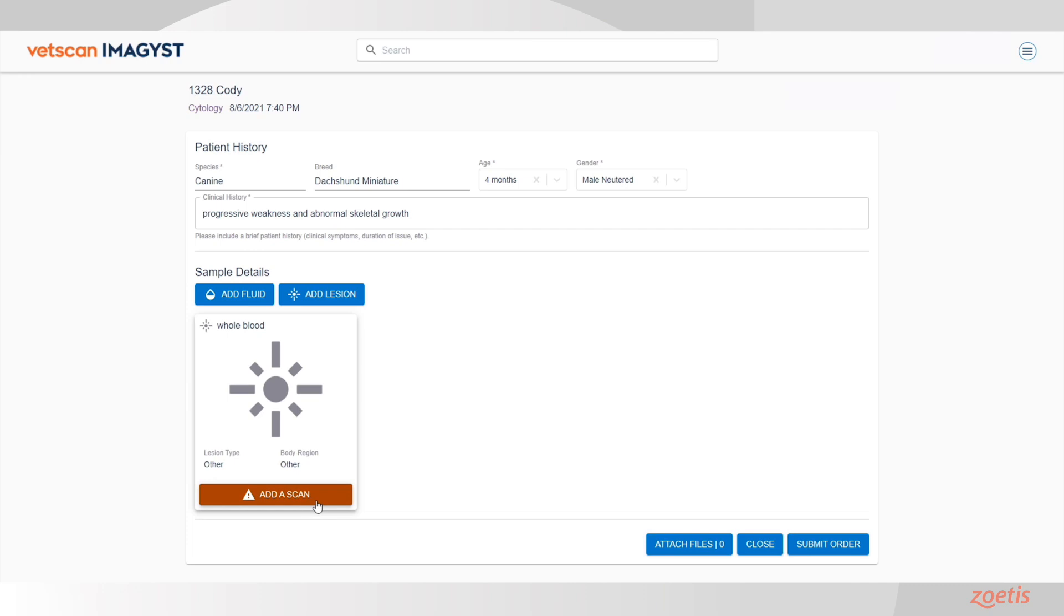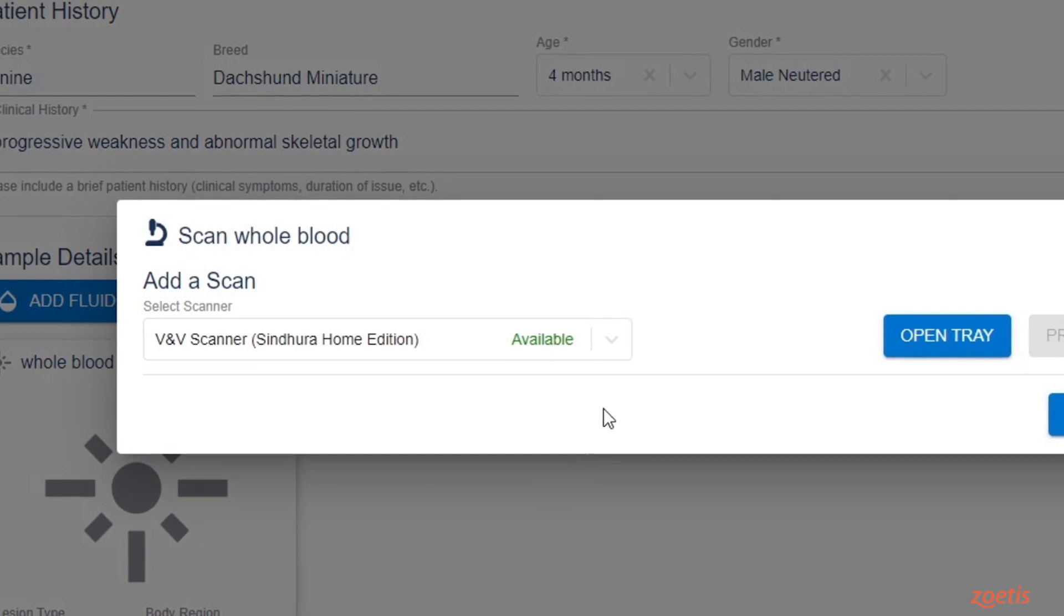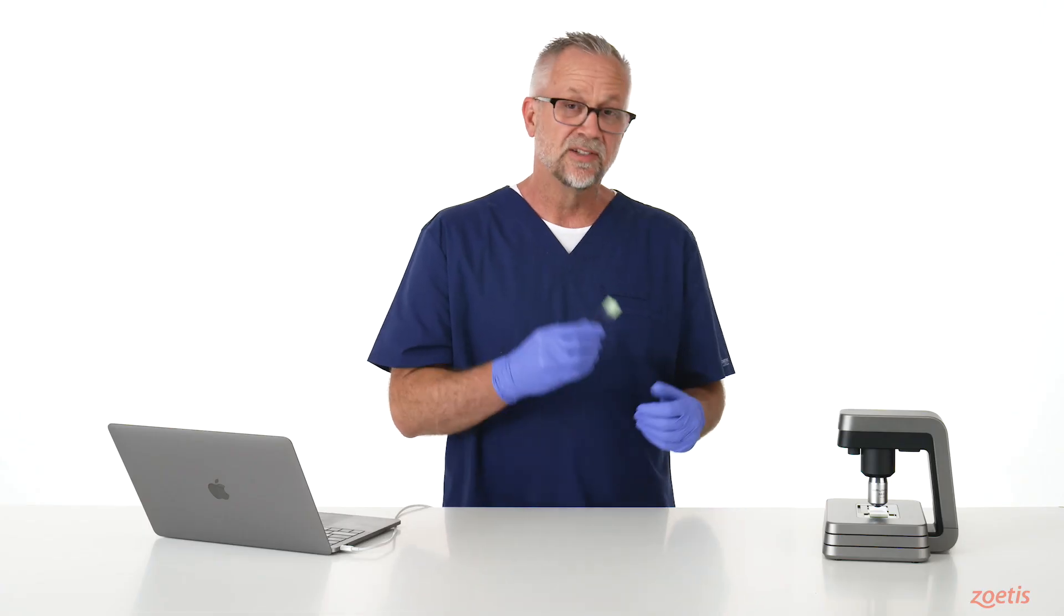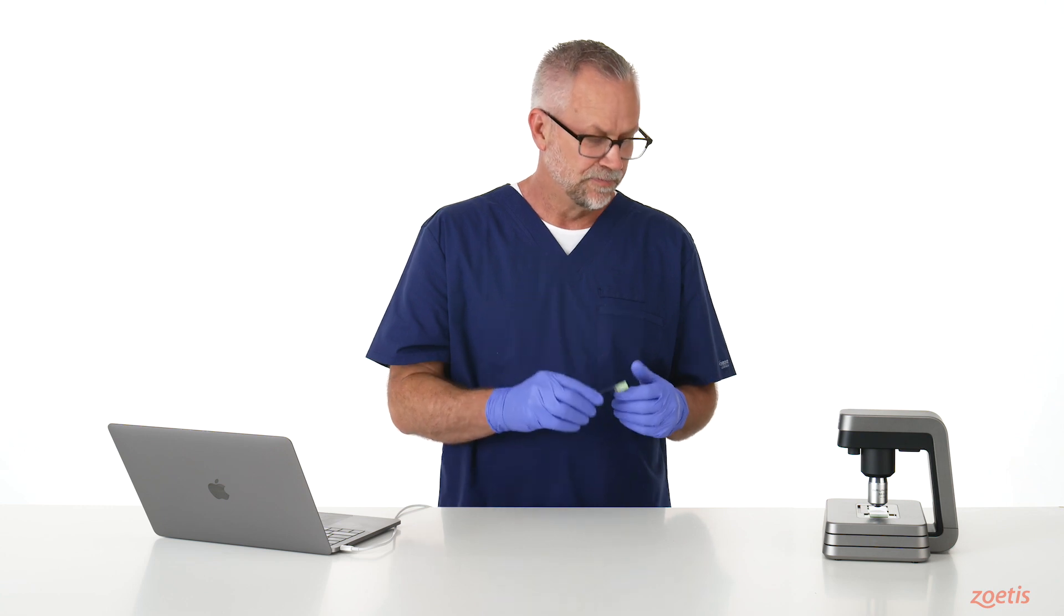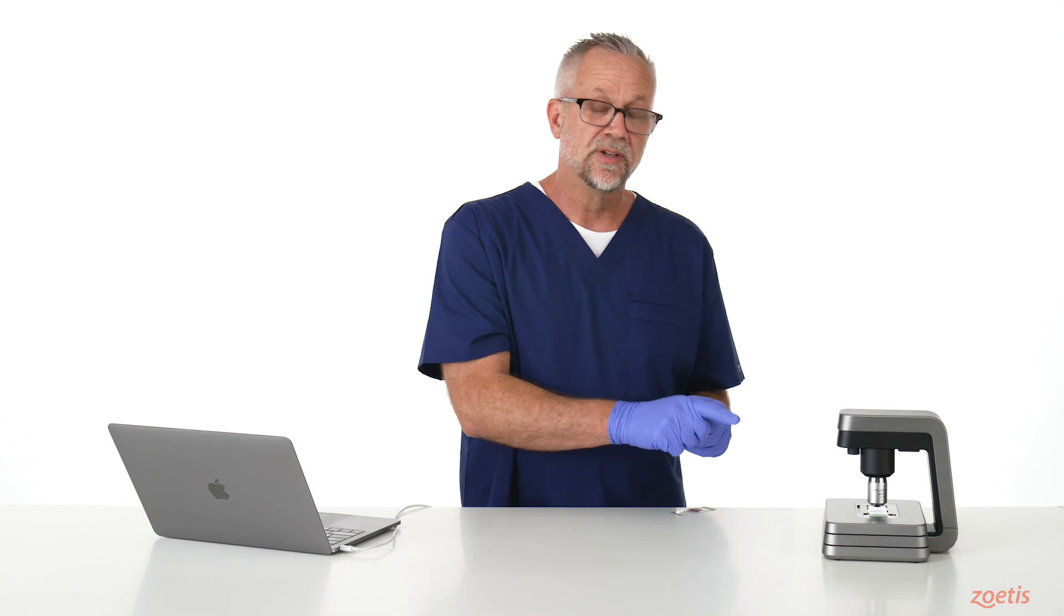Next, click Add a Scan. When the scan window opens, select a scanner. The next step is to place a slide on the scanner stage. Now, before you can place a slide, the stage needs to be in an open position.